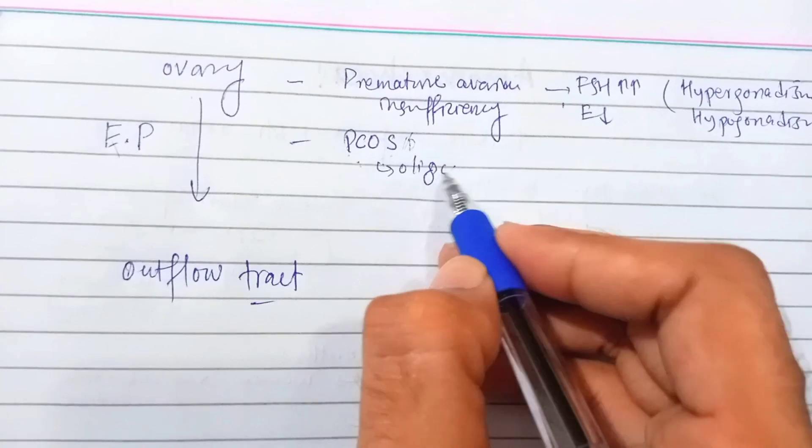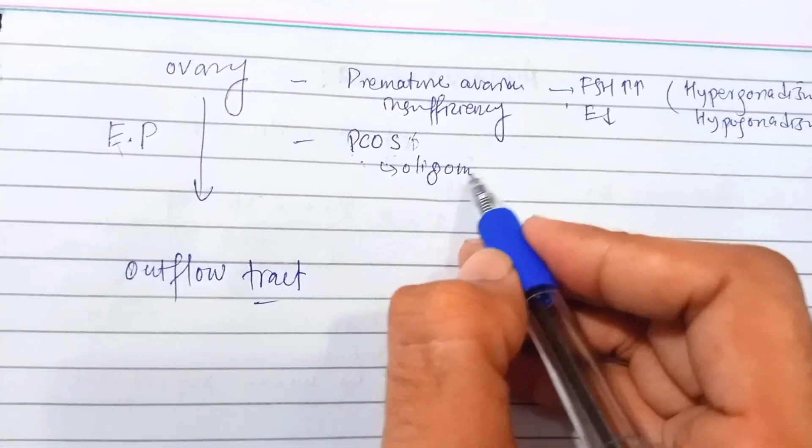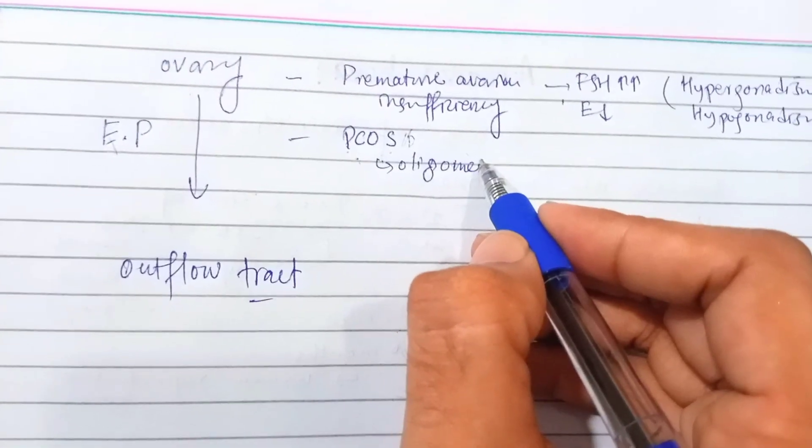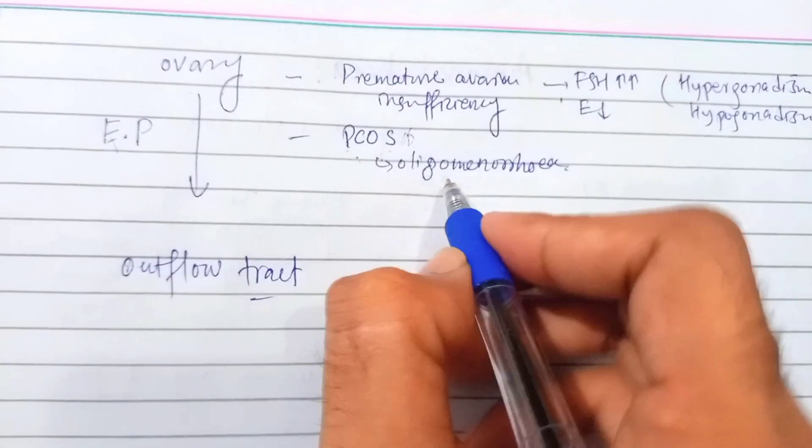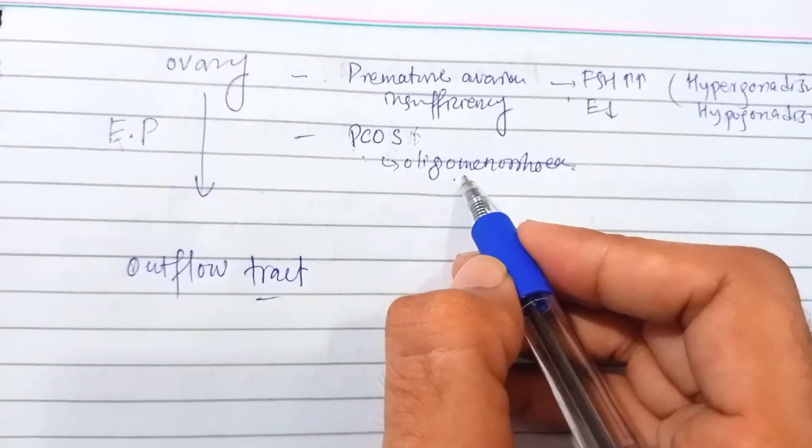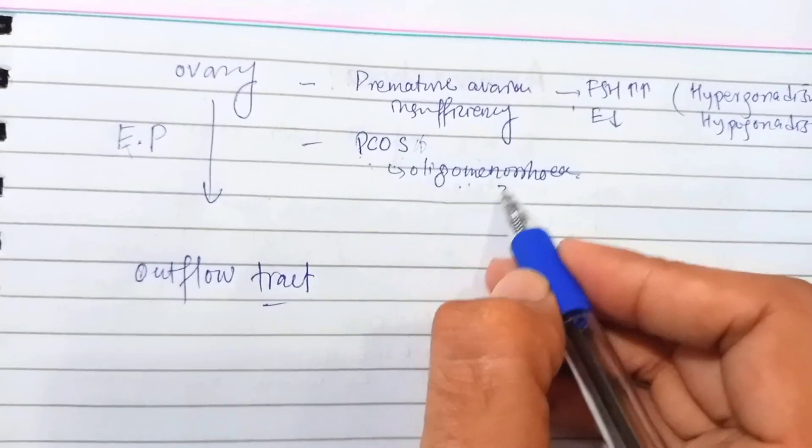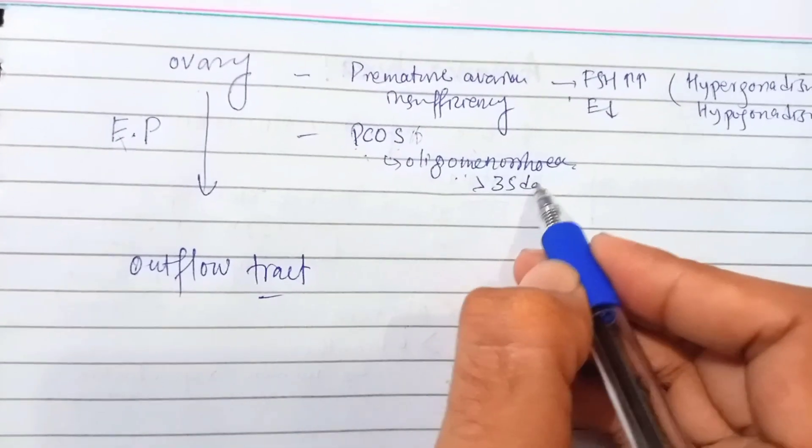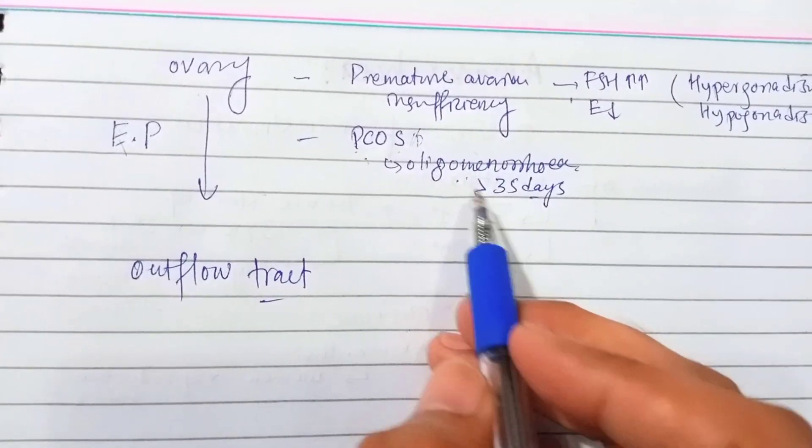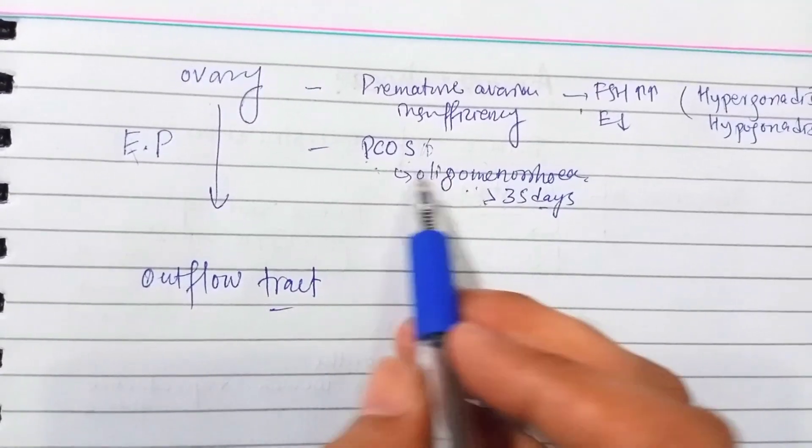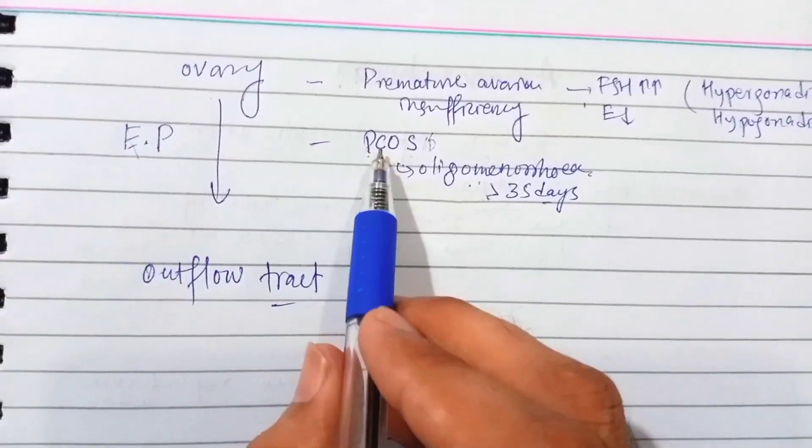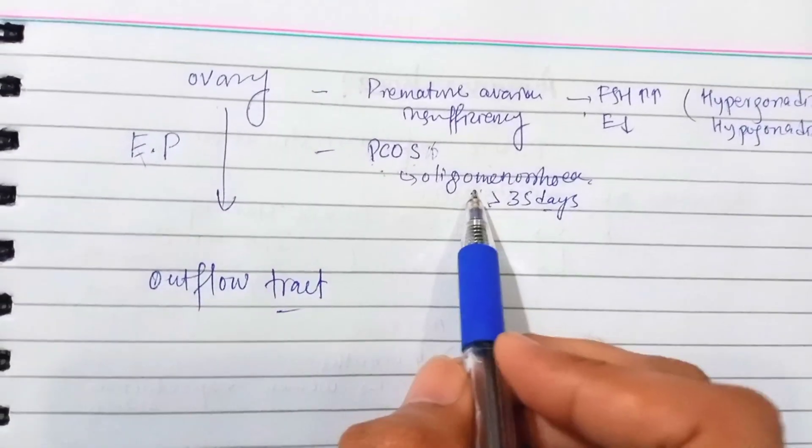We have to ask: is there any oligomenorrhea? Oligomenorrhea is irregular periods at intervals of more than 35 days. So the cycle of menstruation is more than 35 days with irregularity of the cyclic days. This is under the heading of polycystic oligomenorrhea.